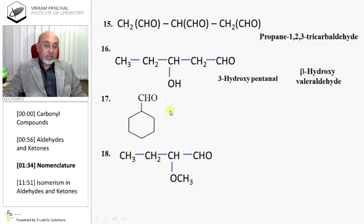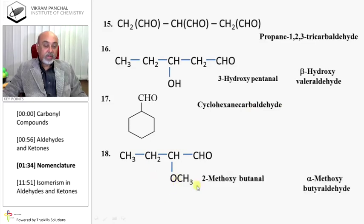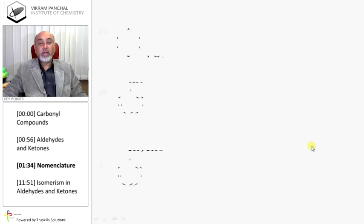When CHO is present with a cyclic alicyclic group, it is necessary to mention the carbon of CHO in the suffix only, so we write cyclohexanecarbaldehyde.